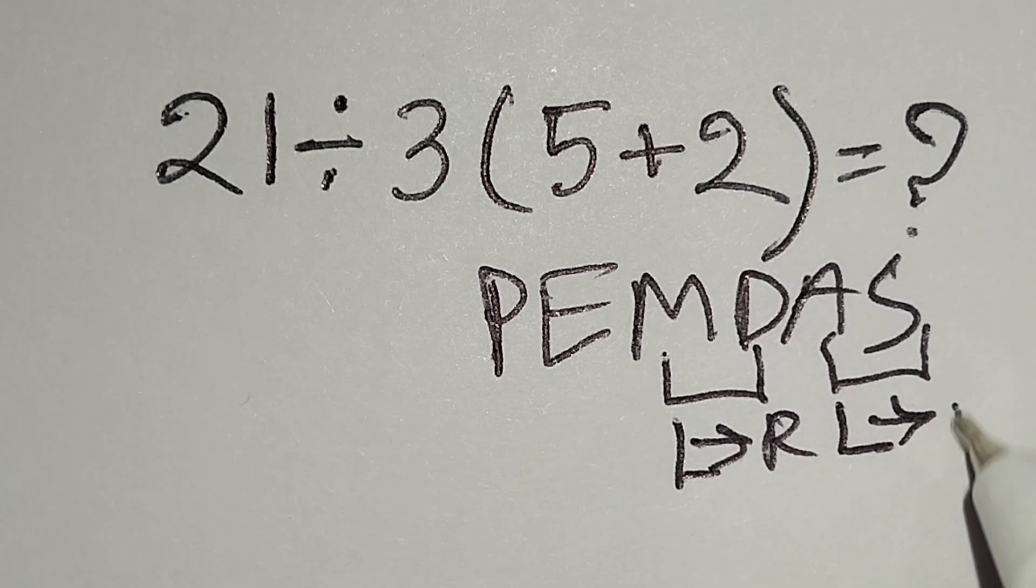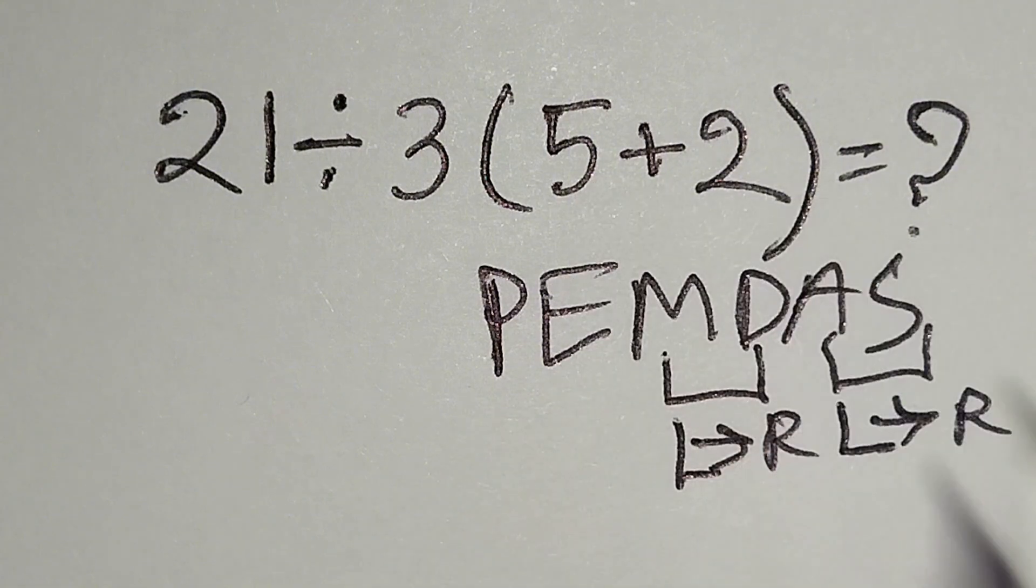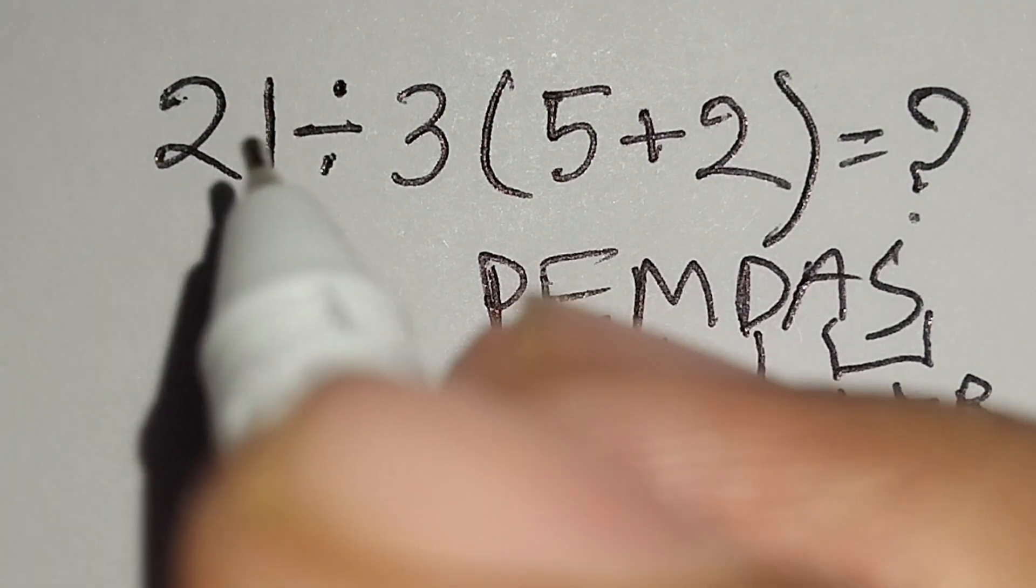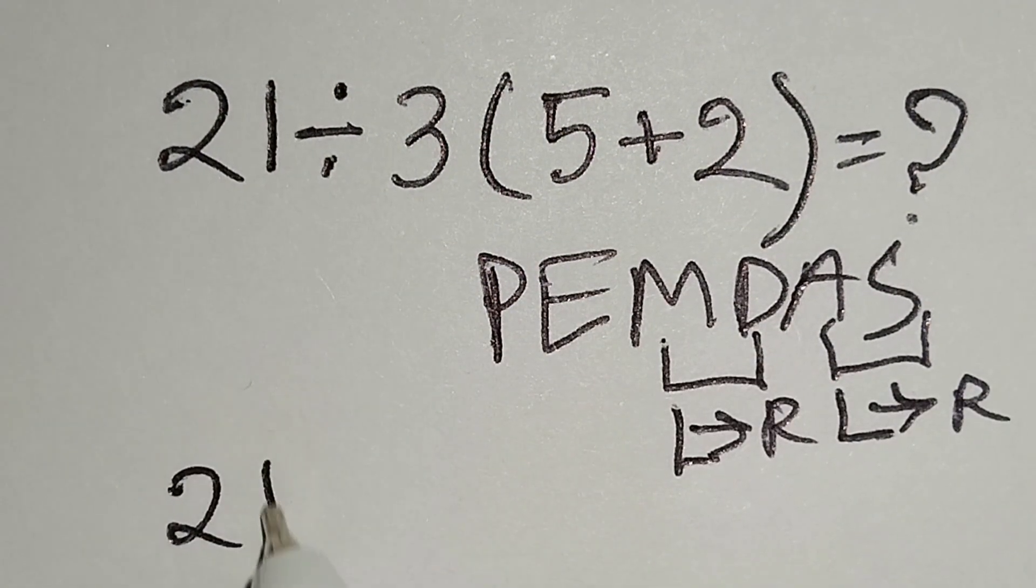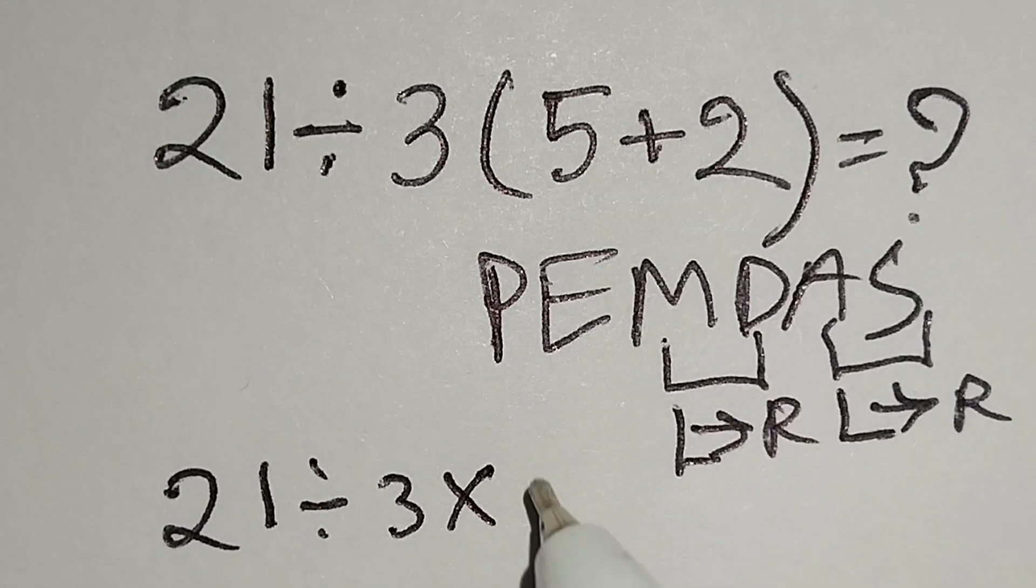Therefore, at first we have to work with this parenthesis. Here, 5 plus 2 gives us 7.